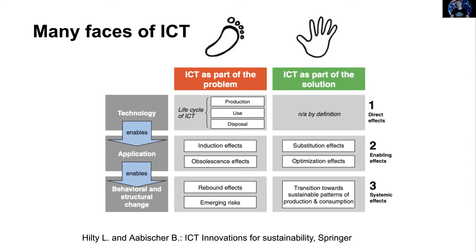We can also see in this particular picture the different levels of effects: direct effects, enabling effects, and systemic effects. Or if we are looking at the left side of this picture, the first level is basically technology, the second level is when we are applying the technology on different domains, and finally the third level is that when we have been applying the application on some certain level, that changes the behavior and can cause some structural changes to our society.